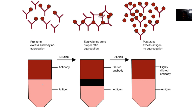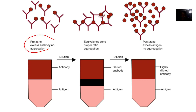If you say an antigen-antibody reaction is a prozone, it simply shows that there is excess antibody — the amount of antibodies was too much for the antigens, so you actually diluted the antigens.